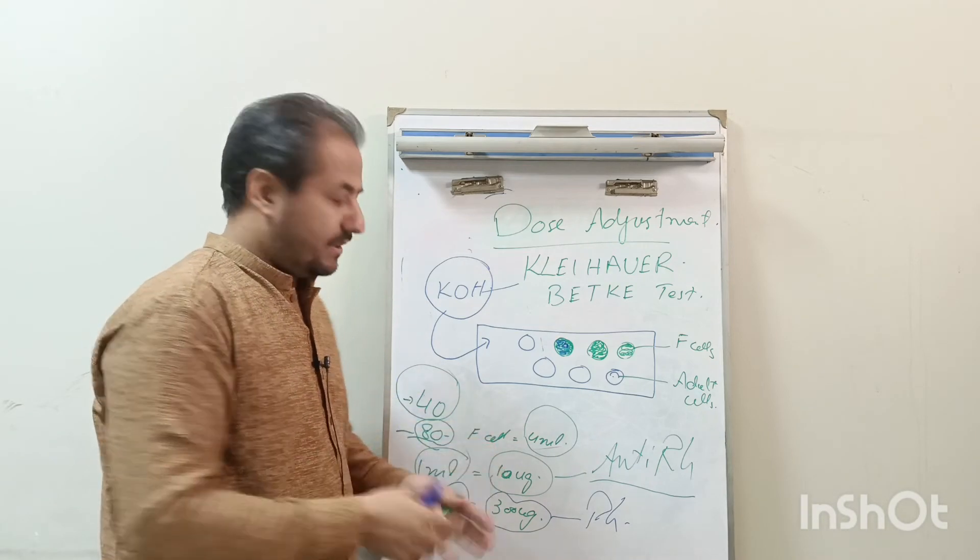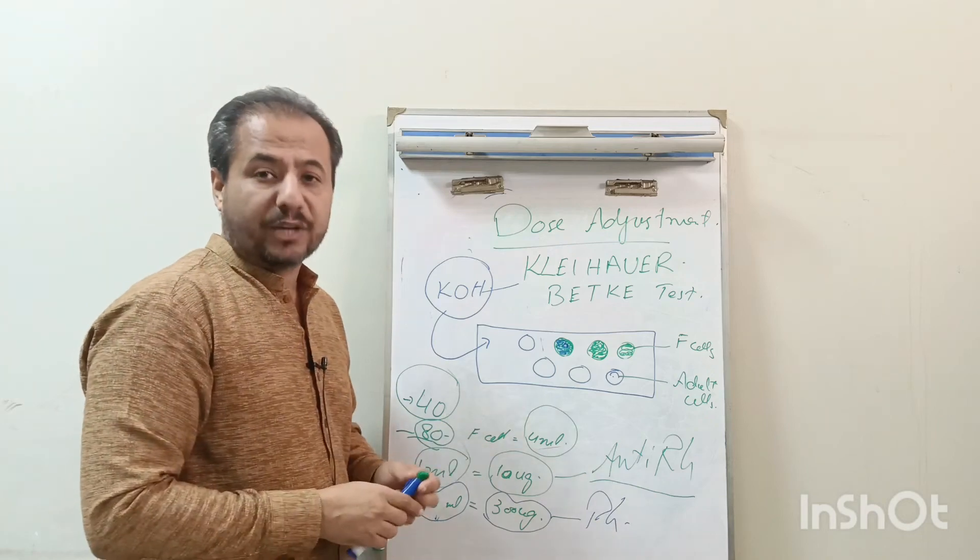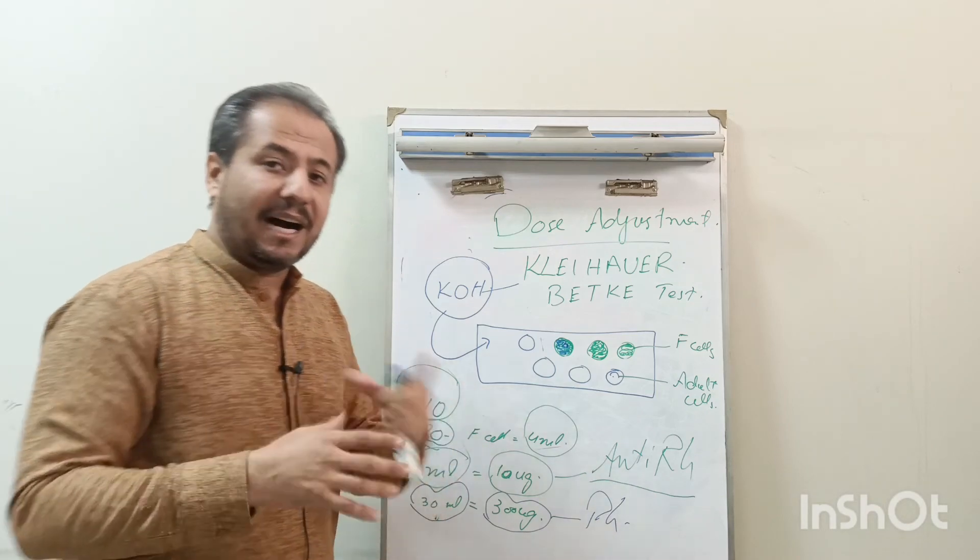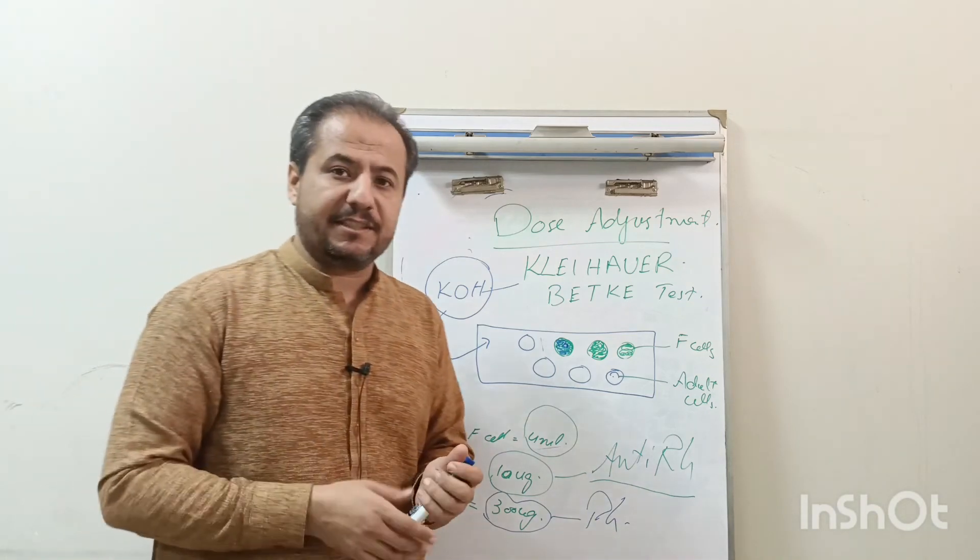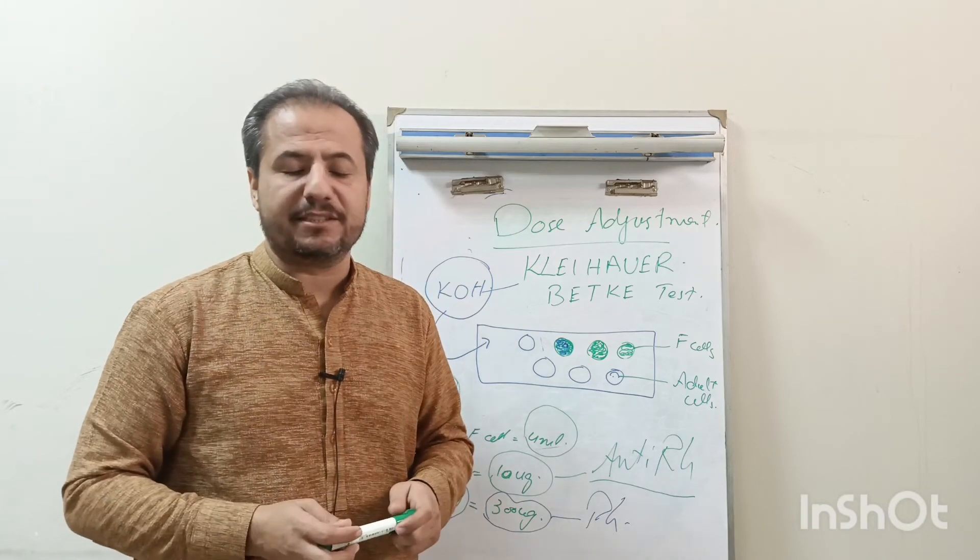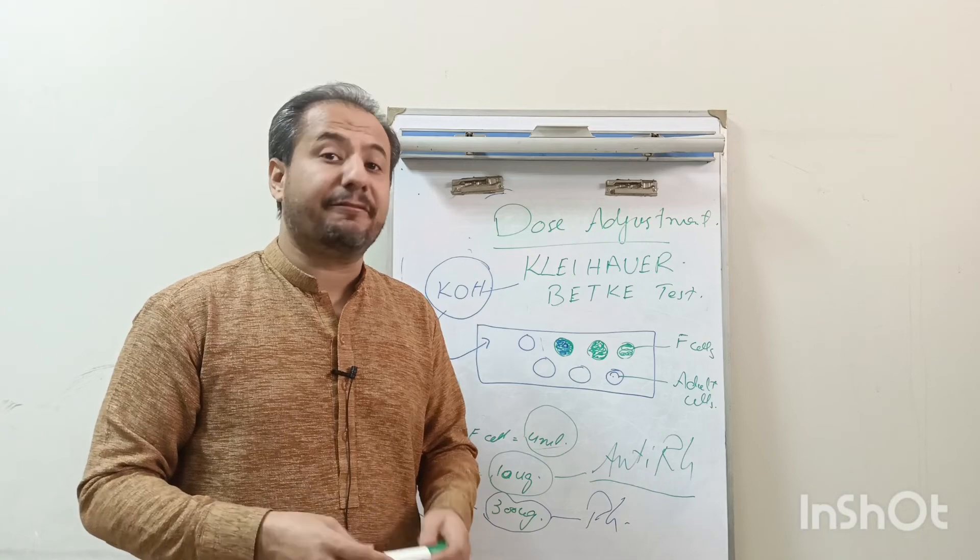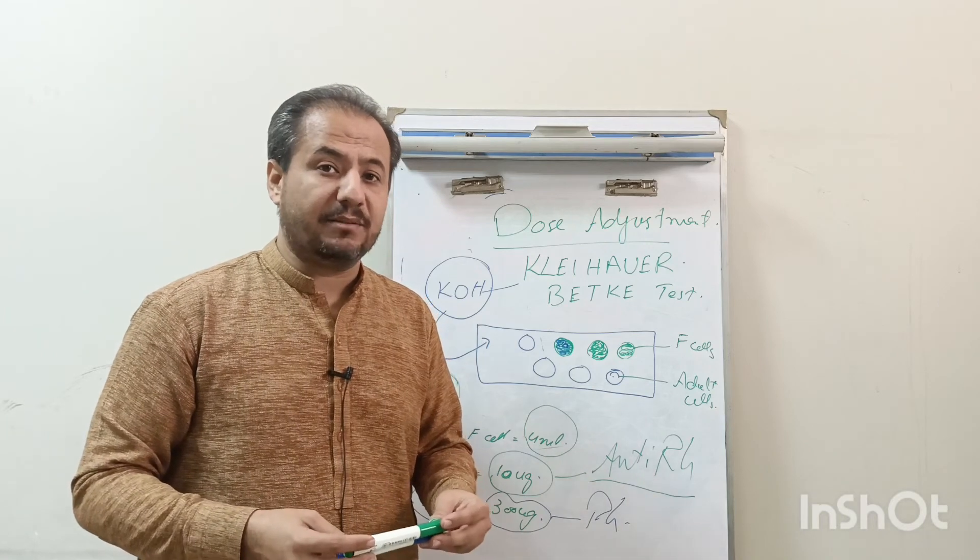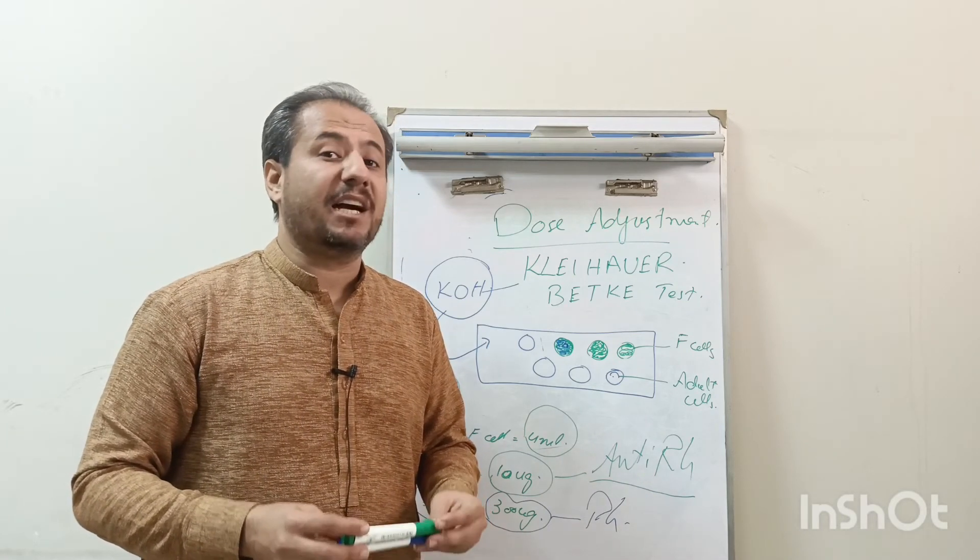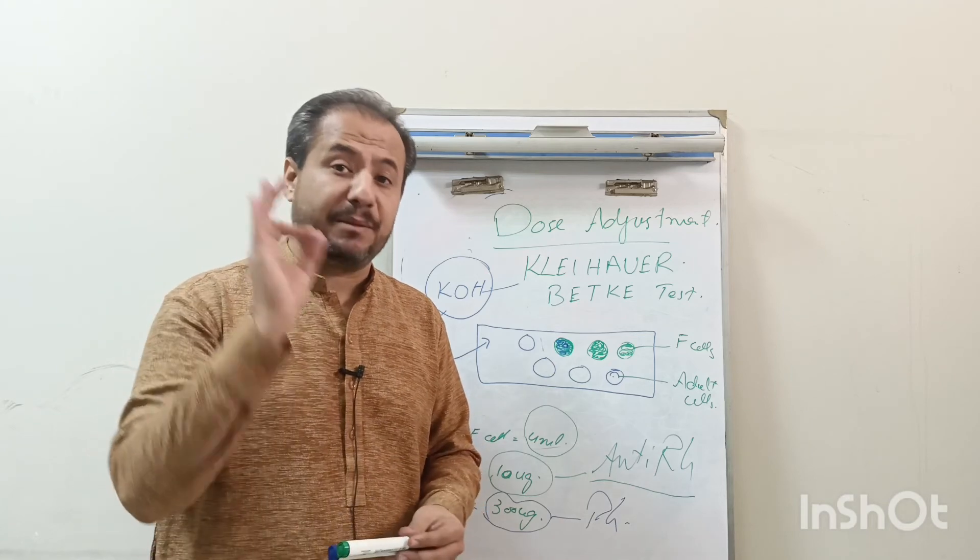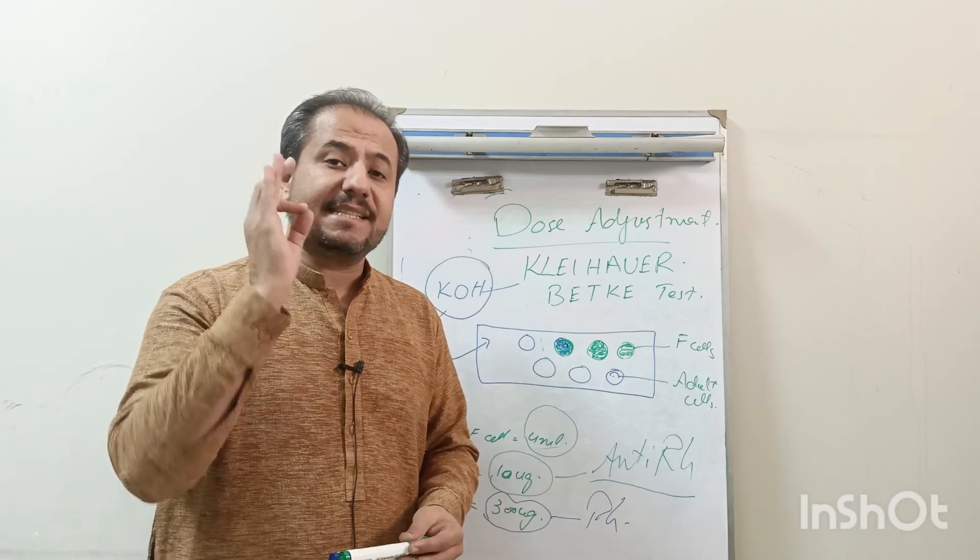If we administrate RhoGAM to those females having Rh positive baby on first pregnancy, it will prevent hemolytic disease of newborn baby. In the next pregnancy, if again Rh positive baby is developed, that baby will not be harmed and it will be a normal pregnancy.